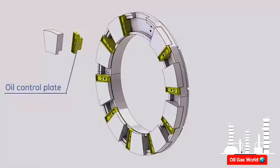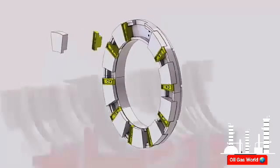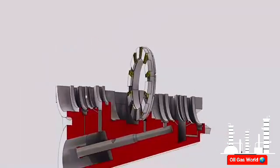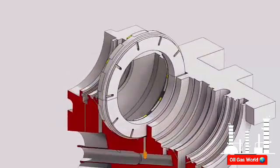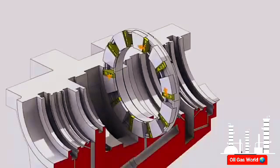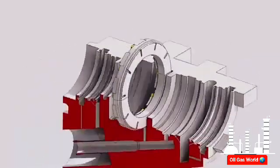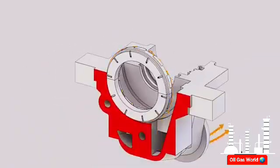Oil control plates are installed between pads. For lubrication, oil is supplied through the oil feed pipe to a port in the lower bearing housing, where the oil flows into annular space around the base ring. Then oil flows through holes on the back side of the base ring to the oil control plates, which introduce the oil directly to the bearing surface before each of the pads. Oil exits at the pad's periphery to the thrust bearing drain cavity to the lube oil drain piping.